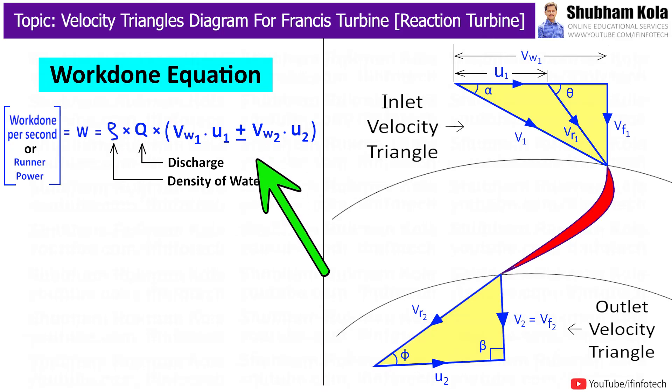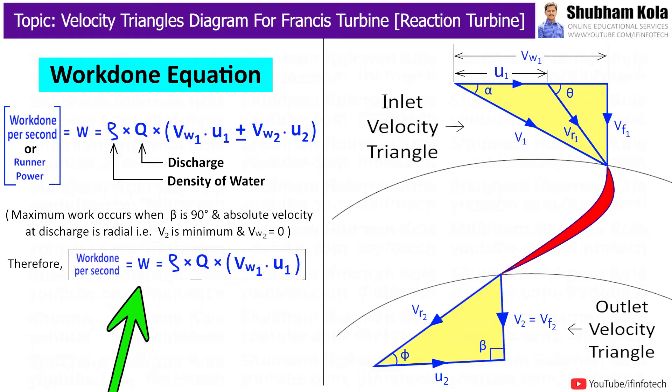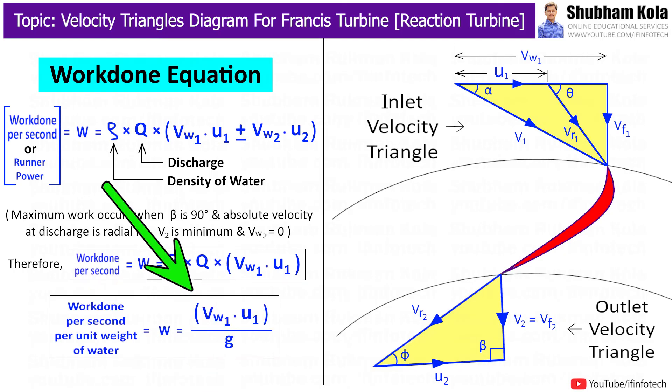Here maximum work occurs when beta is equal to 90 degrees where V2 is minimum and Vw2 is zero. Therefore, equation for work done per second is reduced to this one. And work done per second per unit weight of water is given by this formula.